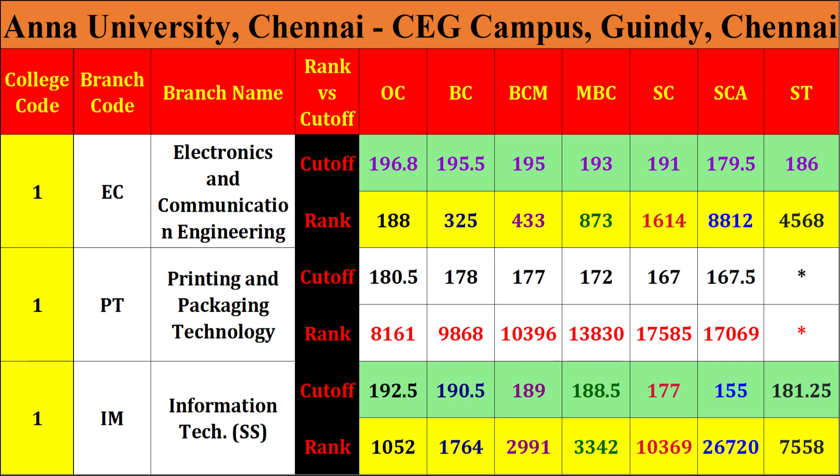ECE from all students' point of view — girls and boys in the same department. Cut-off is 196.75 OC, rank 188. BC is 195.5. OC and BC compare: just one person difference. Rank 325. ST student 186, rank 4568.